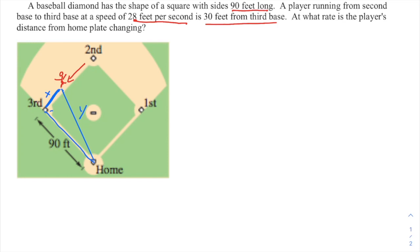Now dx/dt, the rate of change of x, is given to you with one exception: he's running at a rate of 28 feet per second, so x is getting smaller. That distance to third is getting smaller, so that would be a negative rate of change. So dx/dt is negative 28, and we're looking for what is dy/dt at this moment when x is 30. So this actually turns out to be fairly straightforward.